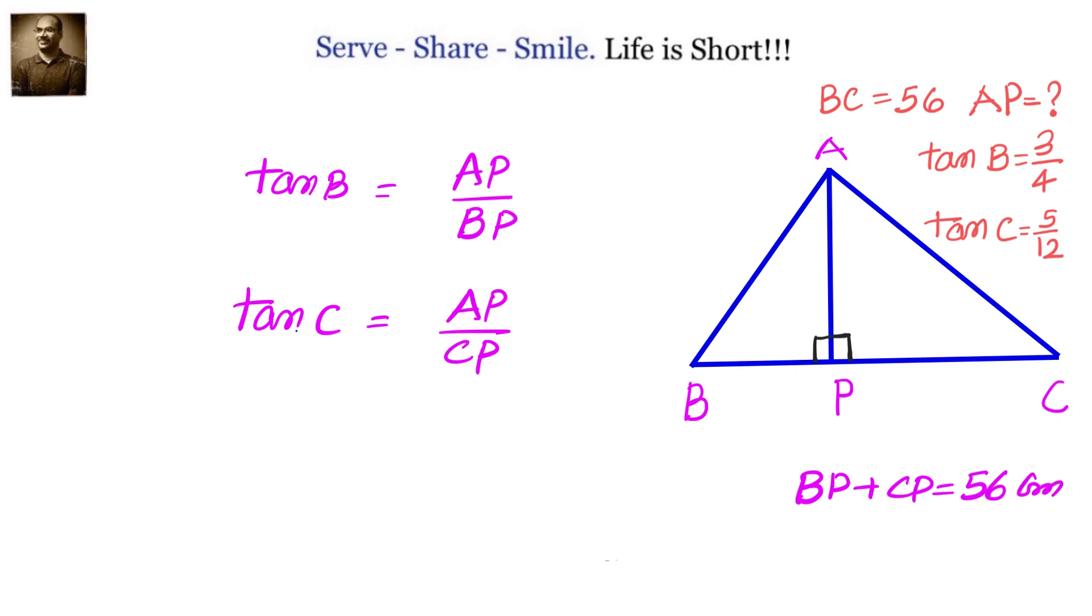If we know the ratio of BP and CP, then we can easily find out BP value, CP value, and automatically we can get the AP value also. For that, we will take the ratios we have here: 3 by 4 and 5 by 12.